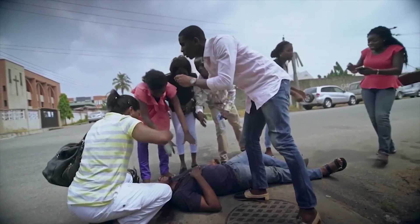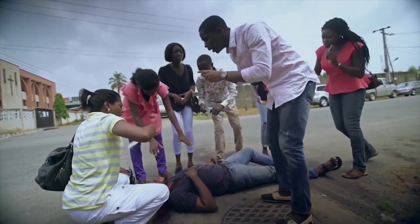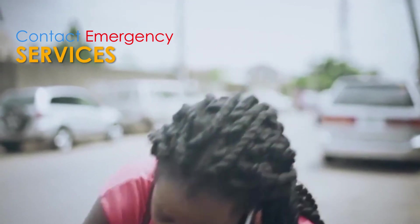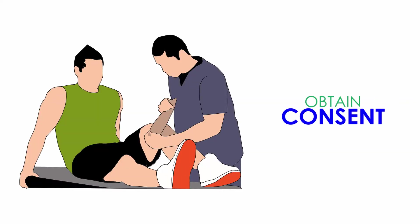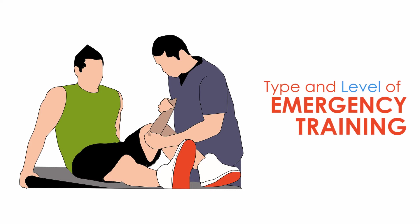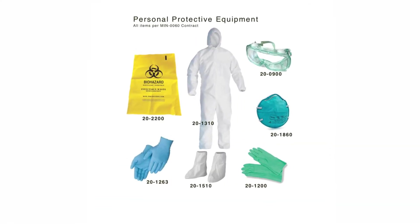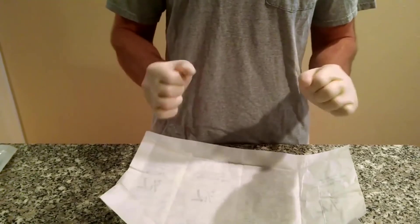If the victim is awake and responsive and there's no severe life-threatening bleeding, contact emergency services and get a first aid kit. Obtain consent — tell the person your name, describe your type and level of emergency training, if any. Use appropriate personal protective equipment, PPE. Put on gloves, if available.